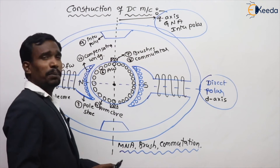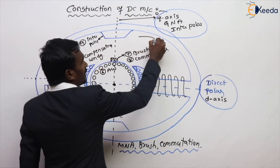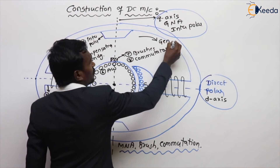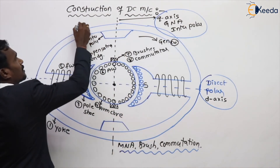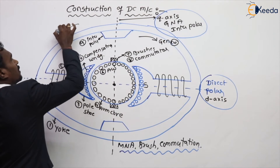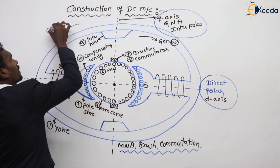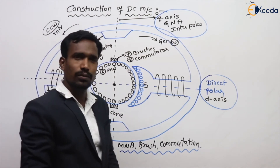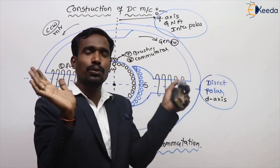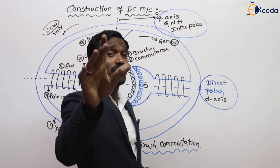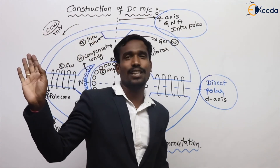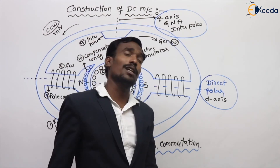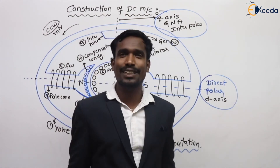Before that, another important point: always generators rotate in the clockwise direction, and always motors rotate in the anti-clockwise or counter-clockwise direction. This is the basic rule. In DC machines, motors and generators always rotate in opposite directions — unlike synchronous and induction machines where both rotate in the same direction.